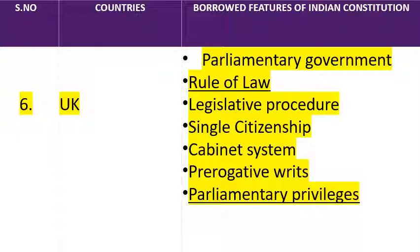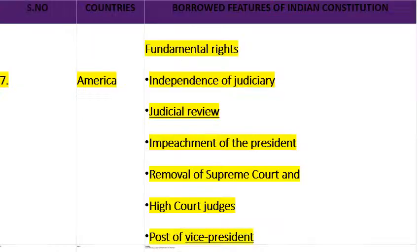Next है Prerogative Writs — यानि कि विशेषाधिकार रिट या उपचार। जो 5 writs हमें दी गई हैं — Mandamus, Prohibition, Habeas Corpus, और Certiorari — अधिकार पृच्छा, प्रतिषेध, बंदी प्रत्यक्षीकरण, परमादेश और Certiorari — यानि उत्प्रेषण। Next है Parliamentary Privileges — Article 105 में Parliament के जो members हैं, उनको कुछ विशेषाधिकार प्रदान किए गए हैं। यह provision भी UK के constitution से borrow किया गया है।